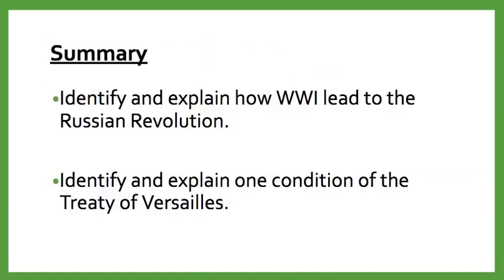This is going to be the end of our World War I lectures. I would like you to be able to identify and explain how World War I led to the Russian Revolution, and then identify and explain one condition of the Treaty of Versailles — I recommend including a potential impact on colonies, Germany, culture, etc. You can find supplemental videos on the YouTube page under Unit 7, and there's also a whole World War I playlist. We're going to start talking about what's happening in Asia, then the Great Depression, and then fascism. Thanks, guys.